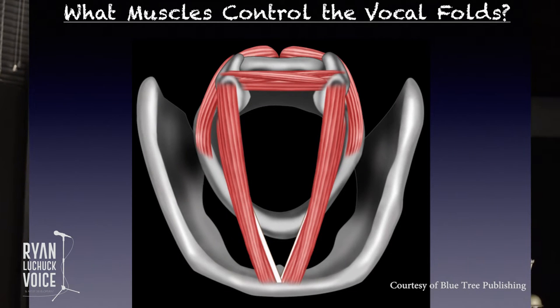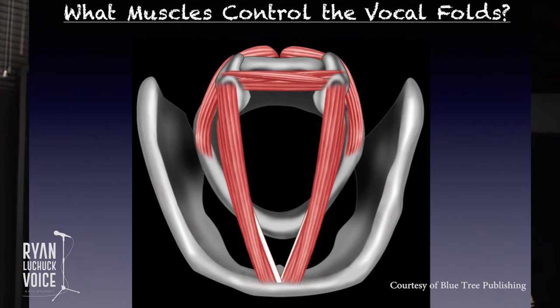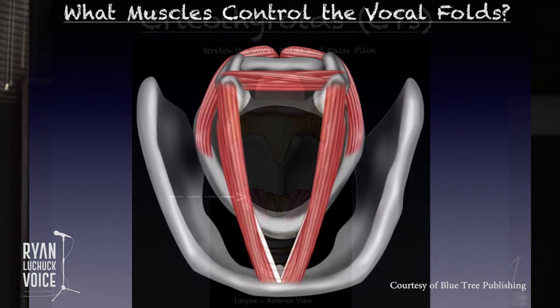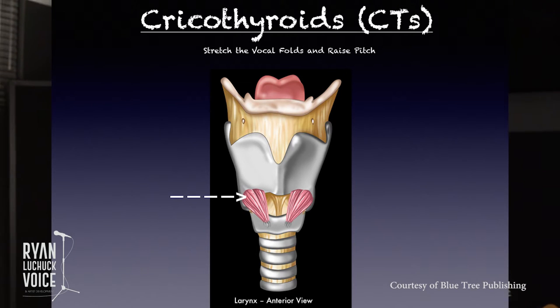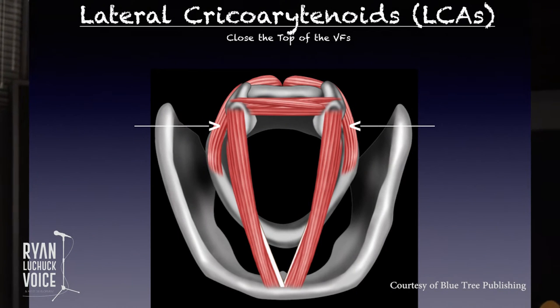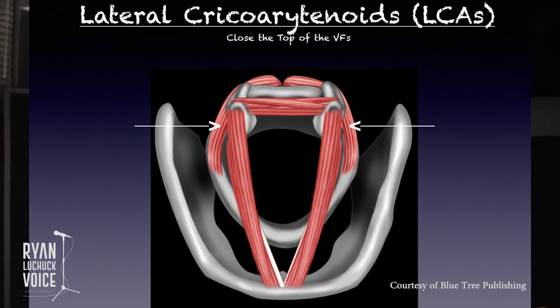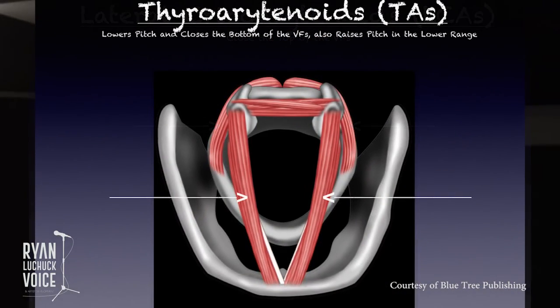What muscles control the vocal folds? Looking down at the vocal folds, we can see they are attached at the front. One of the first muscle groups is the cricothyroids, or CTs. These muscles are very important because they cause the front cartilage to tilt and therefore cause the vocal folds to stretch. When the vocal folds stretch, they raise pitch. The lateral cricoarytenoids, or LCAs, close the very top of the vocal folds.